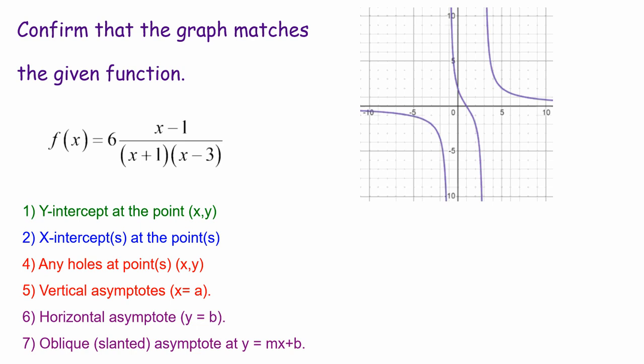Hey there, it's Professor MacDonald. In this video we're going to confirm that this graph matches this given function. We have f of x equals, in factored form, a rational function 6 times the fraction with a binomial in the numerator x minus 1, and in the denominator 2 binomials multiplied x plus 1 quantity times quantity x minus 3. We are going to look for key information that will help us identify if this graph seems right for this function.